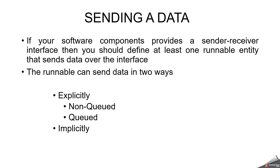Sending data. Now we have seen how we can make a communication. We are going to discuss about how we can send the data using sender receiver interface. To send the data via ports, we have two options. If you want to use a sender receiver interface, you should have at least one runnable entity that sends data over the interface. The runnable can send data in two ways: one is explicitly, another one is implicitly. Under explicit, we have two options — queued and non-queued. But implicitly, implicit communication always prefers non-queued communication.